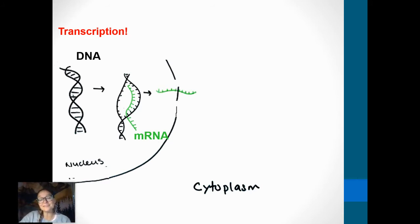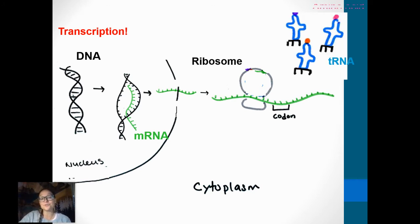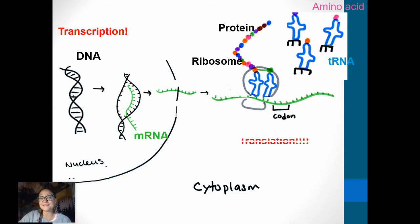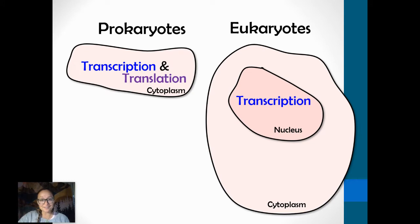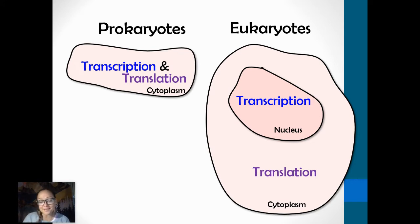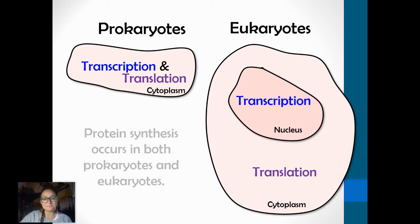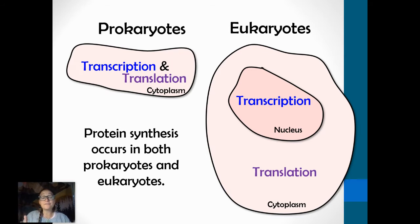The messenger RNA will leave the nucleus, and in the cytoplasm or on the rough ER, it'll find a ribosome. It's there at the ribosome where amino acids are joined together to form a polypeptide in the process called translation. Both prokaryotic and eukaryotic cells do protein synthesis — they both have transcription and translation. But the location differs: for prokaryotes, it's both within the cytoplasm; in eukaryotes, transcription happens first in the nucleus, followed by translation at a ribosome in the cytoplasm. Another difference is that eukaryotes have a step called RNA processing, which we'll talk about towards the end of this video.